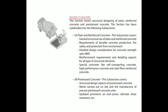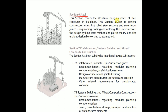Section 5 covers concrete — structural design of plain and reinforced concrete and prestressed concrete. Subsection 5A covers plain and reinforced concrete, including general structural use, requirements for durable concrete, fire safety, detailed design considerations for concrete strength up to M60 grade, reinforcement requirements and detailing for all types of structural elements, and special concretes like self-compacting concrete, high-performance concrete, and steel fiber reinforced concrete. Subsection 5B covers prestressed concrete — structural design aspects of prestressed concrete works on site and manufacture of precast prestressed concrete units, with updated provisions on end zones and ultimate shear resistance.